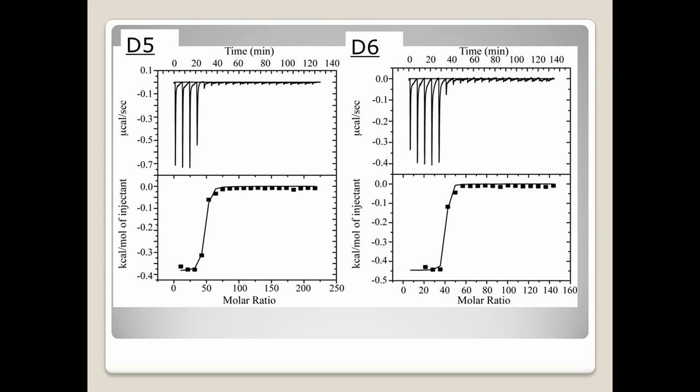Isothermal calorimetry measurements demonstrate the high binding affinities and the negative enthalpy of the peptides upon binding to negatively charged POPG LUVs, which suggests a potential dominant role for electrostatic interactions in the peptides' preferential binding to anionic bacterial membranes.